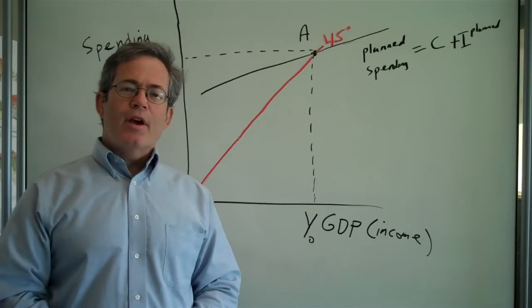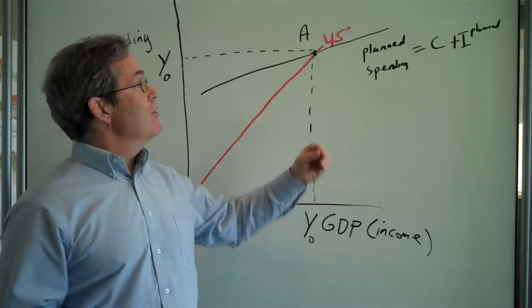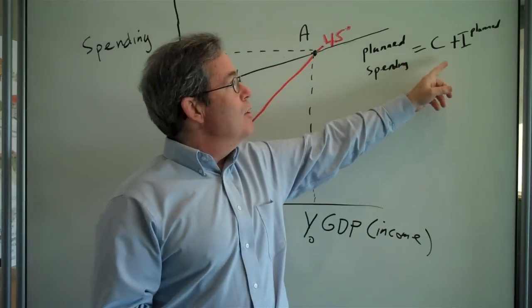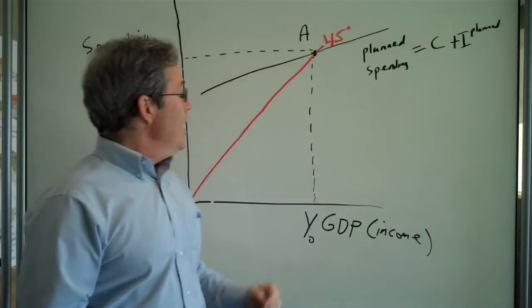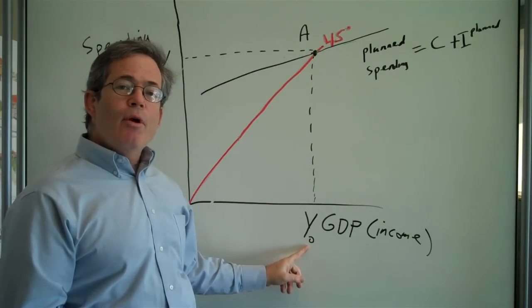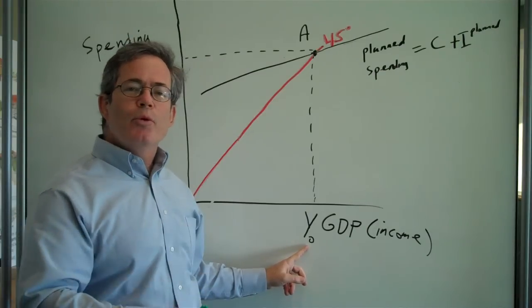So let's say the economy starts off in a boom, in a good situation, where we have planned spending equals consumption plus planned investment, and output is at Y0. And let's say this is a period of high employment, the economy is doing very well.